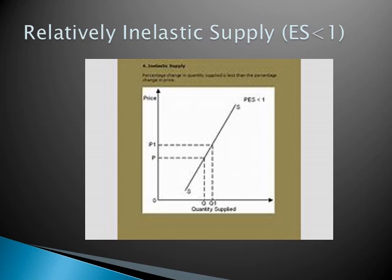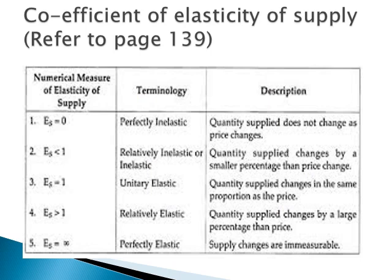These were the five degrees of elasticity. Now we are going to move on to our next heading: the coefficient of elasticity of supply. This is just a summary of all five degrees of elasticity of supply. Open your book on page number 139 — you will find the exact same table there. You can go through it from the slide or open your book simultaneously.